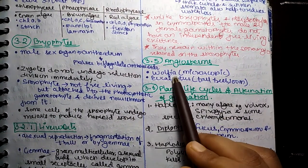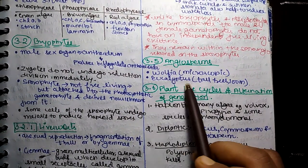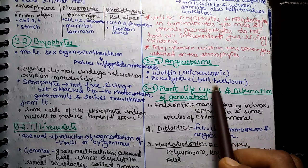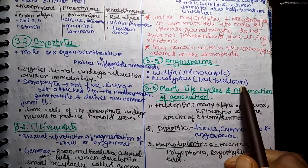Next subtopic is Angiosperms. Wolfia is microscopic and Eucalyptus is a tall tree, approximately 100 meters.